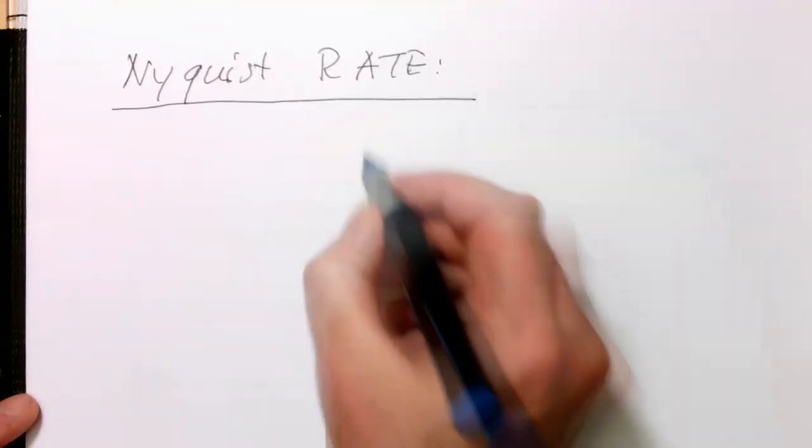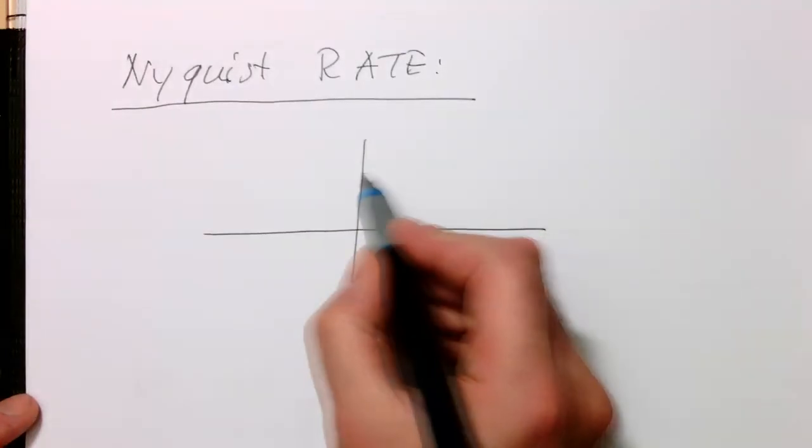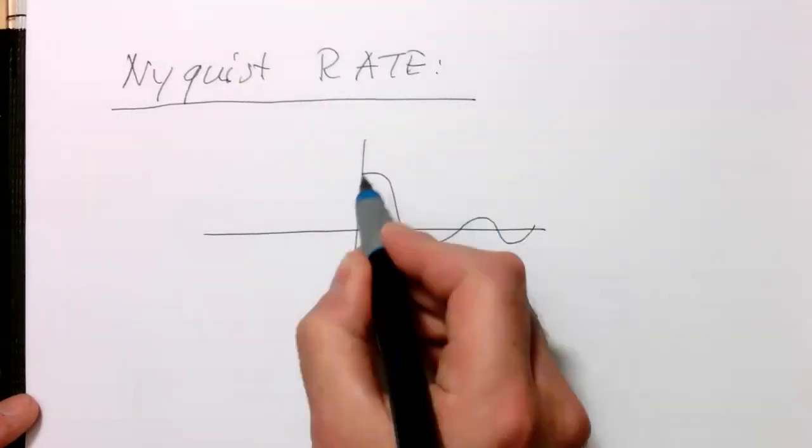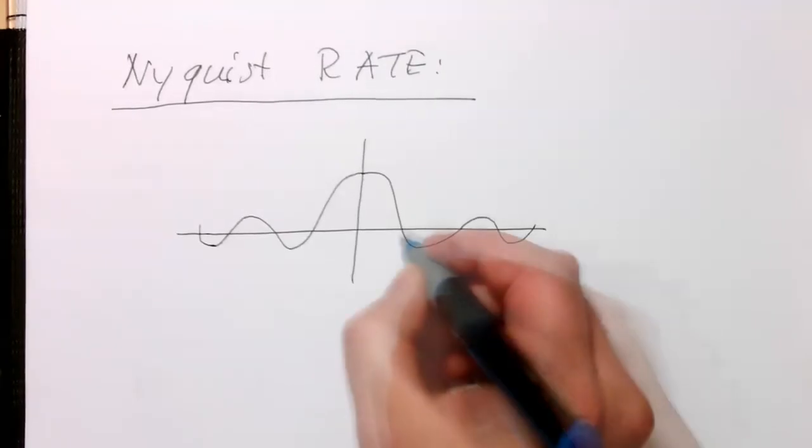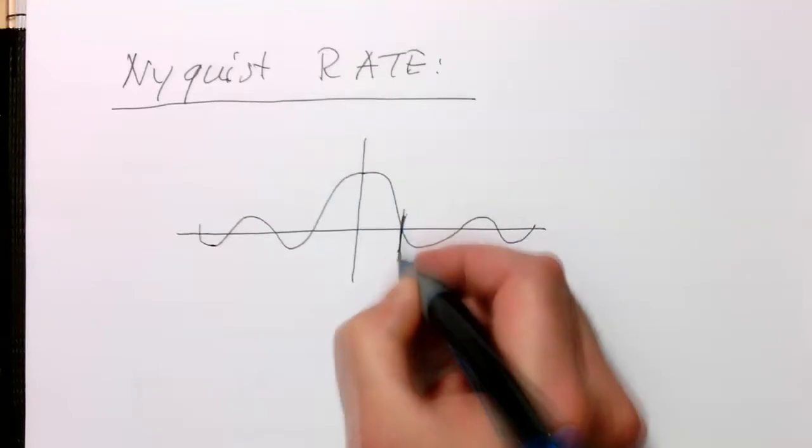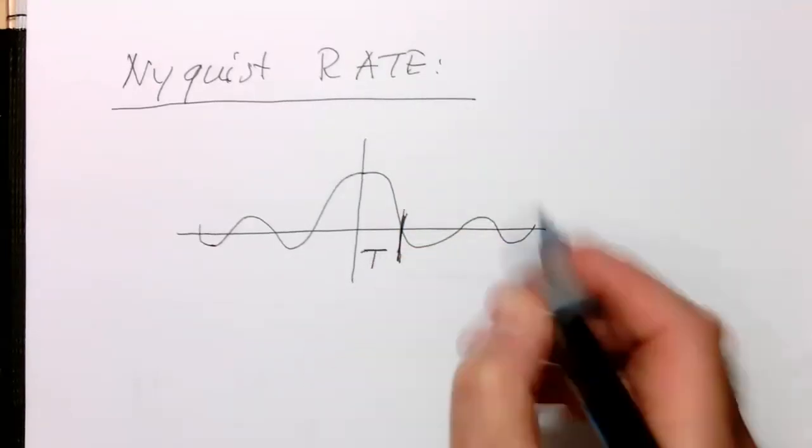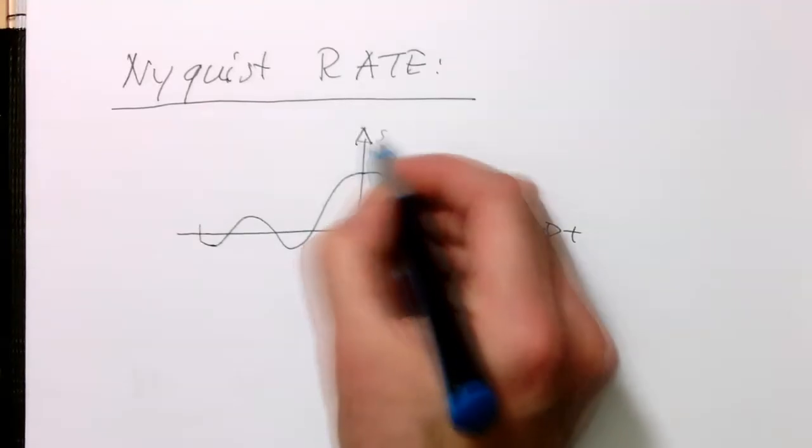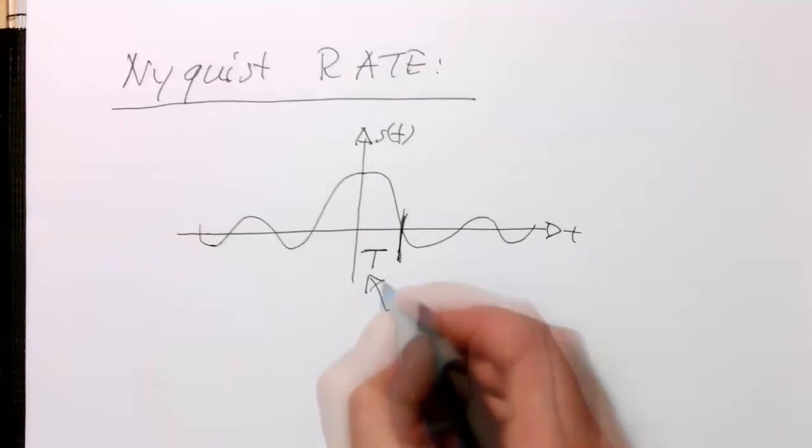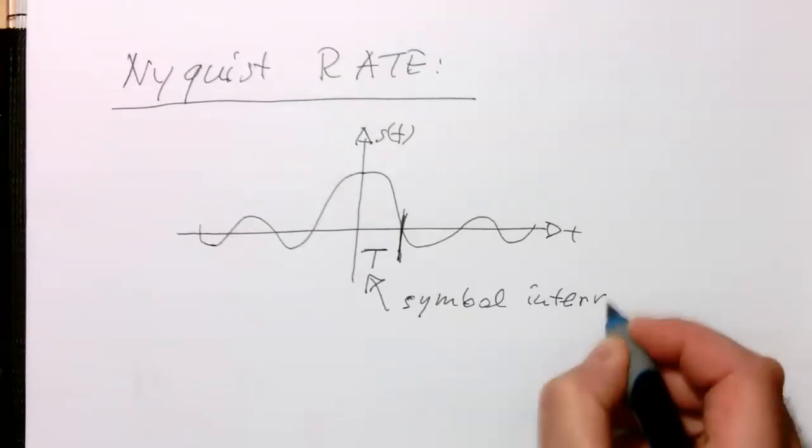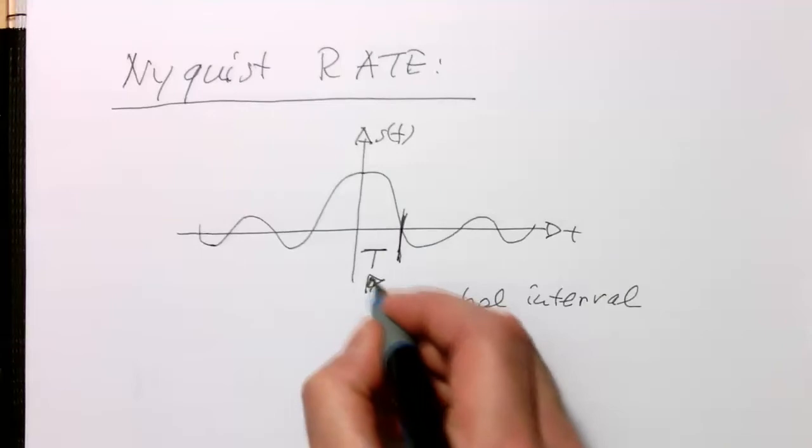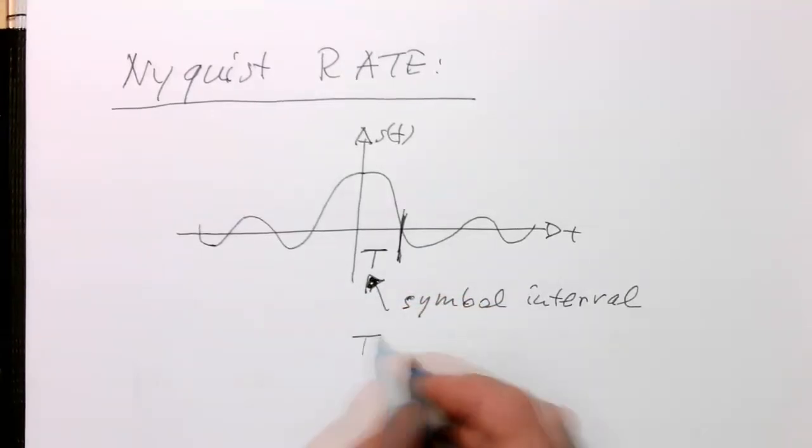If we have again our sinc function here, then obviously we need to have our symbol interval T. Let's label this here properly, s(t). That's our symbol interval. Our symbol interval T here needs to be one over 2B.